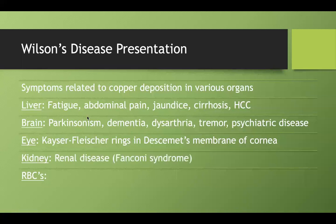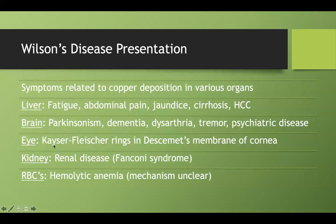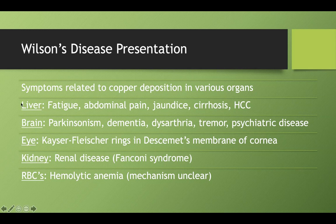In the kidney, you can get renal disease, something called Fanconi syndrome. In the red blood cells, you can get hemolytic anemia. These are much lower yield than Kaiser-Fleischer rings, cirrhosis, and the wide variety of neurologic and psychiatric symptoms. Those three are much more relevant on test day.